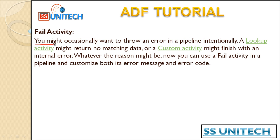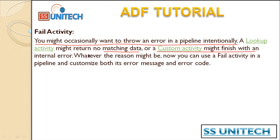So what is the Fail activity? You might occasionally want to throw an error in the pipeline. For example, a Lookup activity might return no matching output data, or a custom activity might finish with an internal error. Whatever the reason, you can use the Fail activity in the pipeline and customize both its error message and error code.